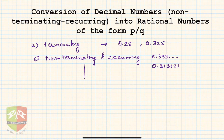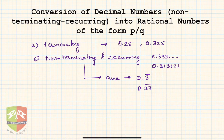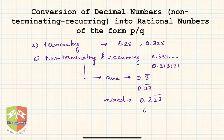In non-terminating recurring we also had two types. One is pure form, where all the decimals after the decimal point are repeating — for example 0.37 bar — so all the digits repeat. There is also a mixed form, where few digits after the decimal will not be repeating and others will be repeating. For example, 0.223 bar, which is 0.22232323 and so on.